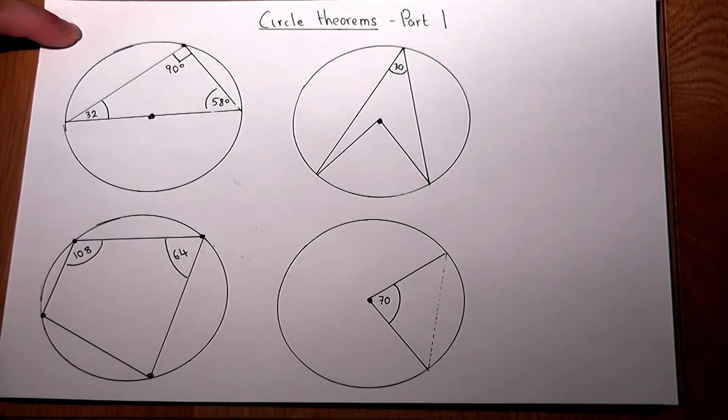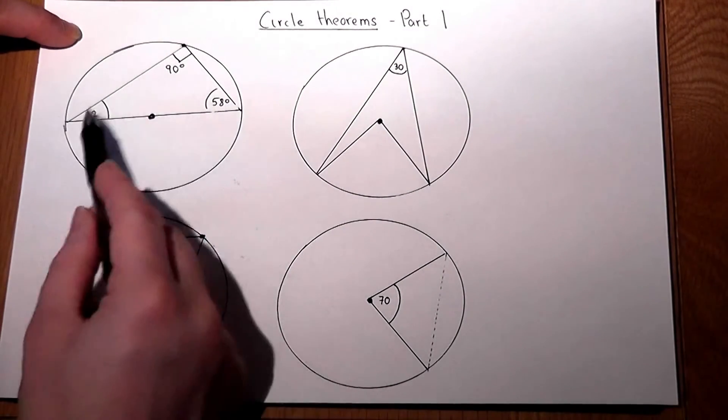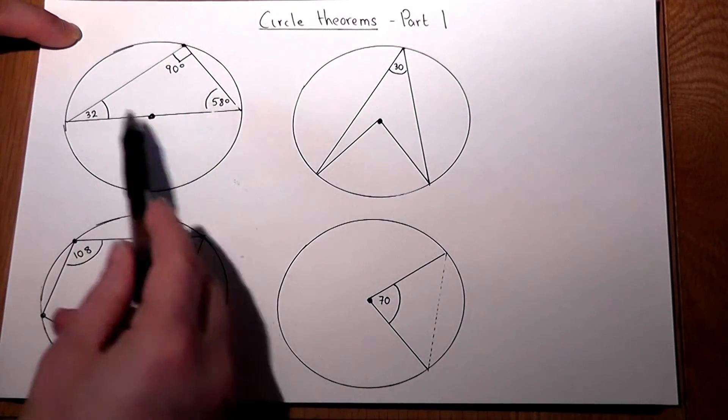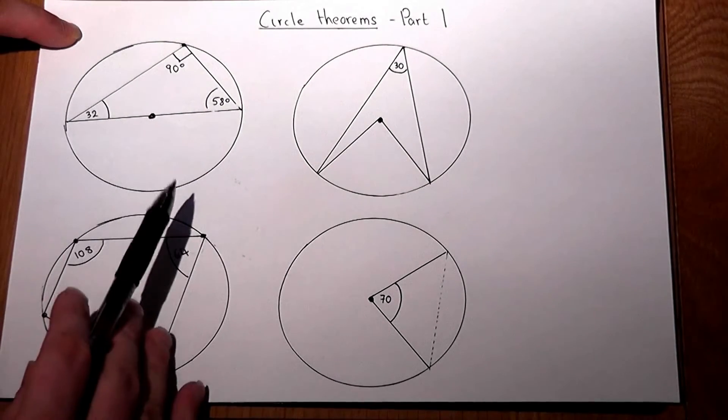So we can find out missing angles contained within circles by knowing key properties.